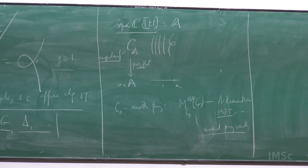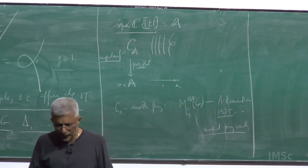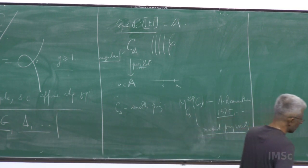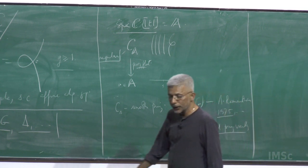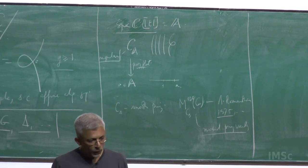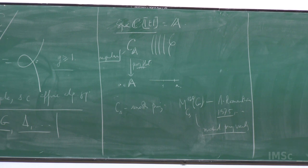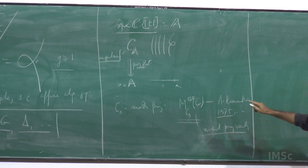Ever since then, it's been studied a lot. Recently, in the past couple of decades, people look at the stack of G-bundles. It's more amenable to some of these questions, and then ask whether there is a suitable semi-stability on this stack so that you can construct the so-called coarse moduli and study that. This construction is a completely GIT construction which was done by Ramanathan. He has a notion of semi-stability which I will come to.